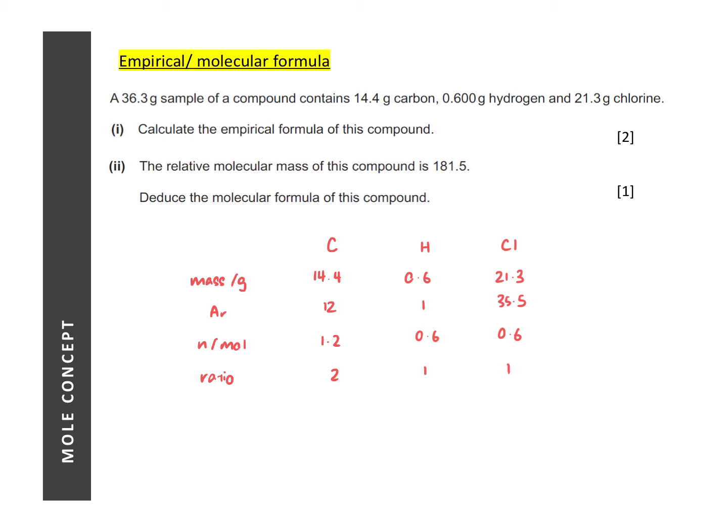In cases where it's not obvious, the trick is to look for the smallest number of moles and divide all the number of moles by the smallest number of moles to give us the ratio. So once we have the ratio, we can tell that the empirical formula for this particular compound is C2HCl.